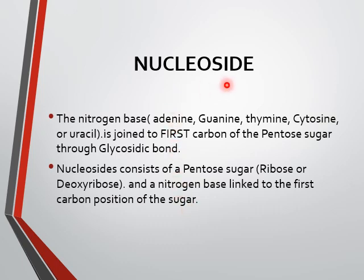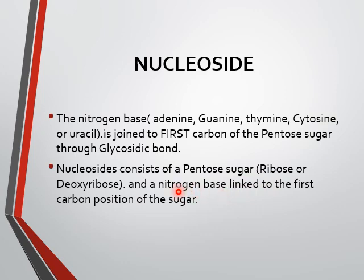What is a nucleoside? This is a very important term. The nitrogen base — it may be adenine, guanine, thymine, cytosine, or uracil — is joined to carbon number one of the pentose sugar through a glycosidic bond. A nucleoside consists of a pentose sugar, which may be ribose or deoxyribose, and a nitrogen base linked to the first carbon position of the sugar.